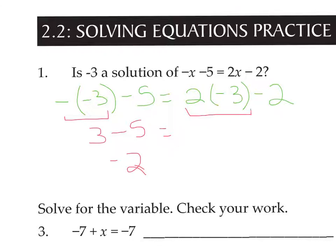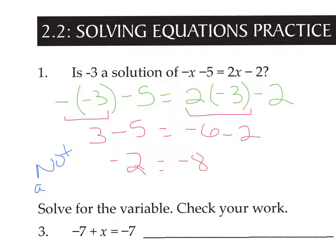Multiply first: 2 times negative 3 is negative 6. Minus 2 comes out to be negative 8. These are not equal. If they are not equal, that means negative 3 is not a solution. The answer here is no, or not a solution, because the two sides came out to be different.